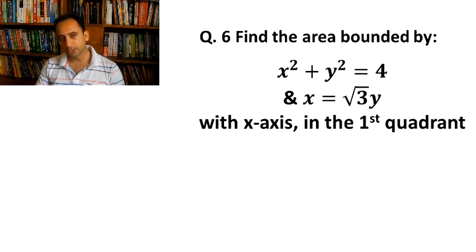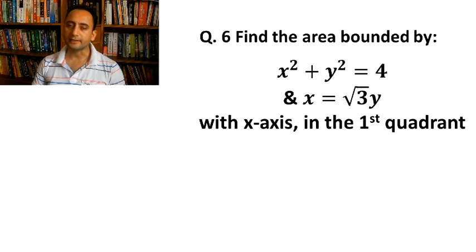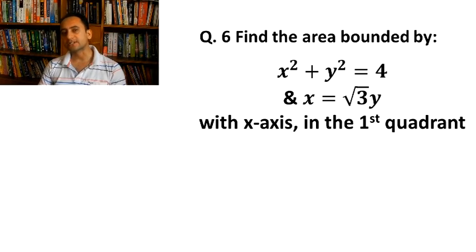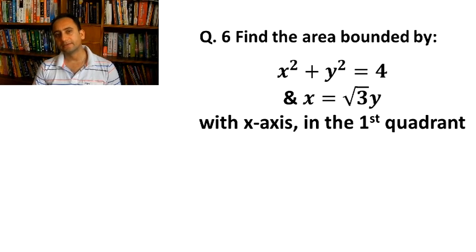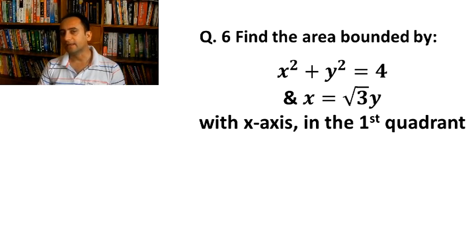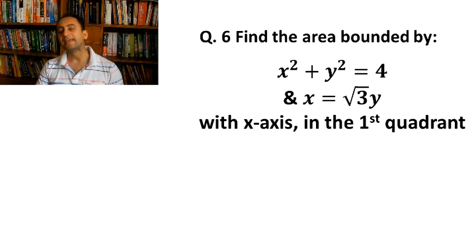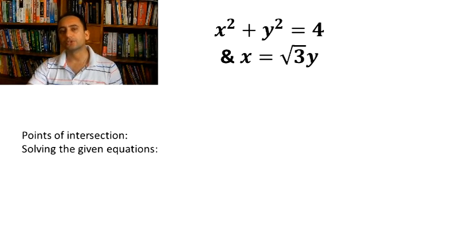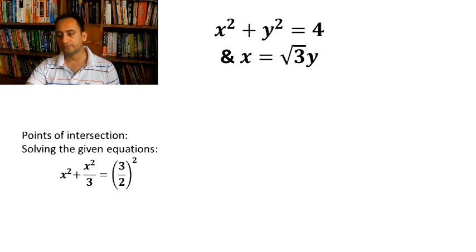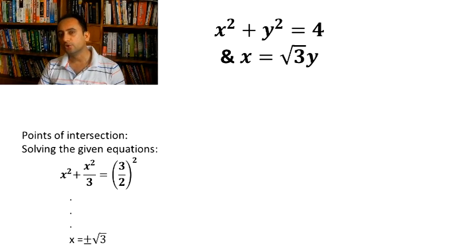Question number 6: Find the area bounded by x² + y² = 4 and x² = √3·y. The first equation represents a circle with center at origin and radius 2. The second equation represents a straight line passing through the origin. We need to find the area bounded by these two equations along with the x-axis in the first quadrant. Solving the two equations gives x = ±√3, so there are two points of intersection: x = -√3 and x = √3.